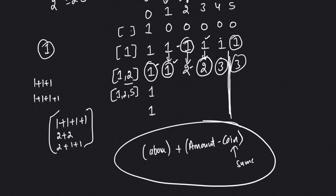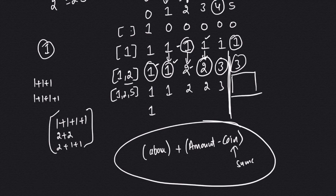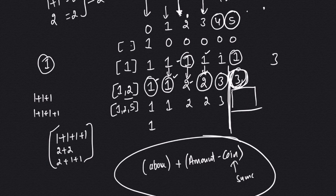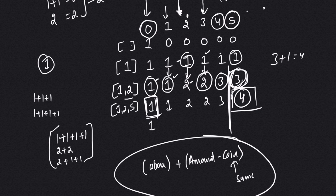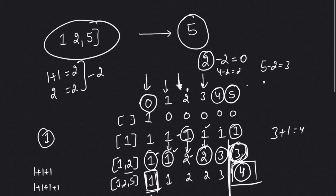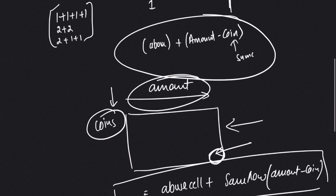Adding coin of 5 will not make changes for amounts less than 5, because I cannot form an amount less than 5 using a coin of 5. So up to amount 4, I simply use the value from above. For amount 5: take above cell which is 3, and subtract 5 from 5 to get 0, then check combinations at position 0 in this row, which is 1. So 3+1=4. I get 4 total combinations using coins 1, 2, and 5 to make amount 5.